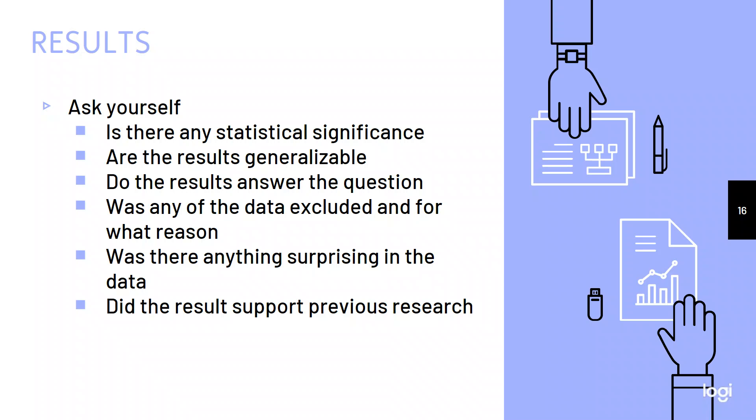So stuff to ask yourself when it comes to results: is there any statistical significance? Are the results generalizable? And this is why we talk about replicating the methods, right? If I can't replicate, if I can't do it, then they're not generalizable. Do the results answer the question? Do they have anything to do with what we initially started to do? Was any of the data excluded for whatever reason? Why was that data excluded? That happens upon occasion. Was there anything surprising in the data? And did the data support the previous research in that literature review?